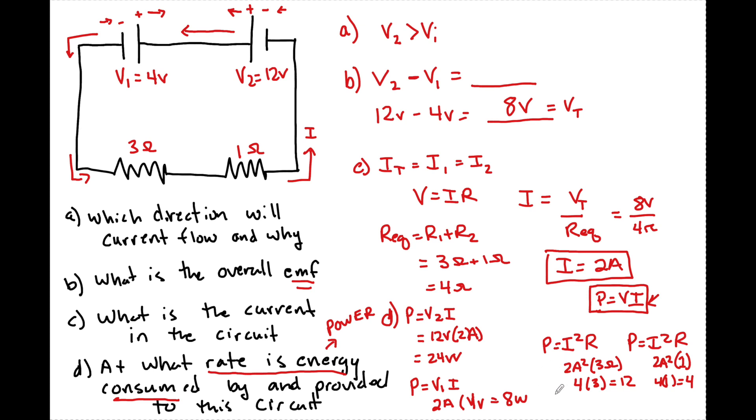Okay. And we know that energy is going to be conserved. So this gives, so we'd have 24 watts provided to the system. And that must equal everything that's taken away. 8 plus 12 plus 4 equals 24 watts. So that's how we know that we're right.